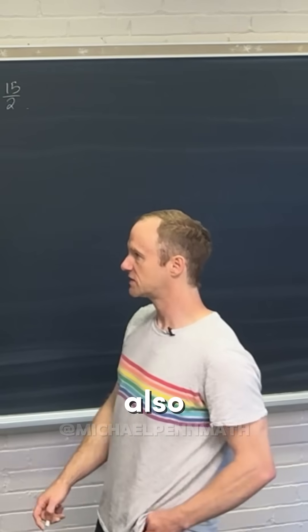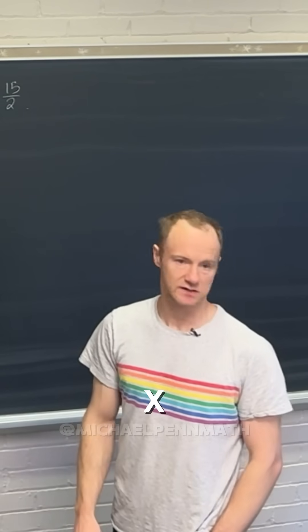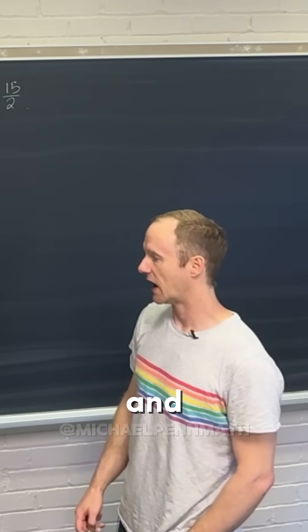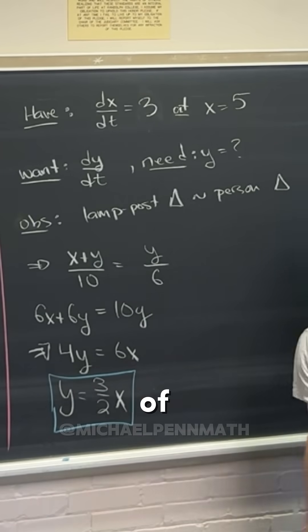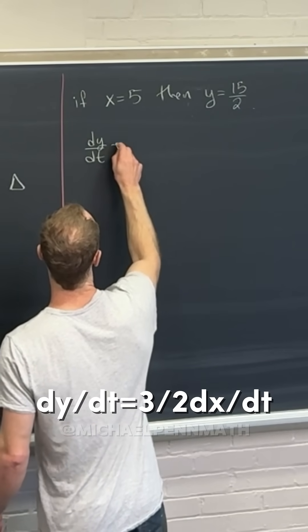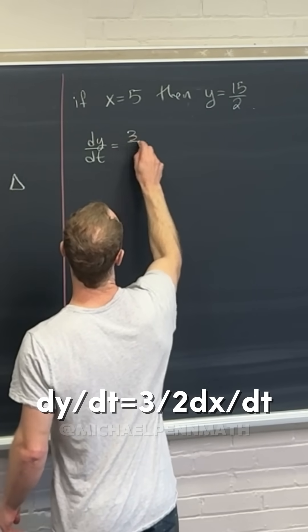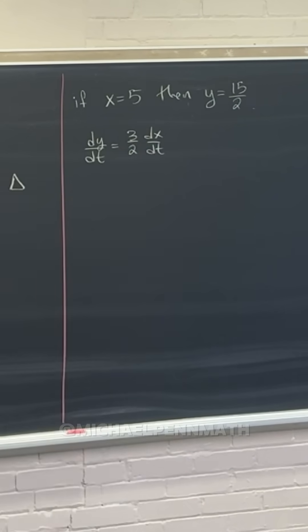Let's also see a relationship between the derivative of y with respect to t and the derivative of x with respect to t. We can get that by taking the derivative of this equation, which gives us dy by dt equals three halves dx by dt.